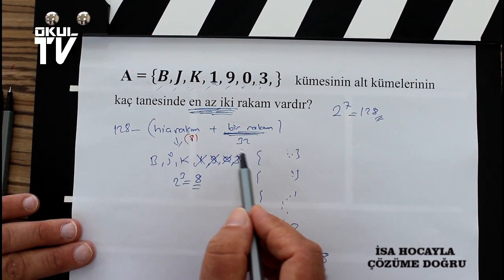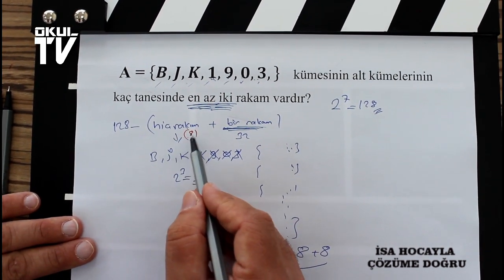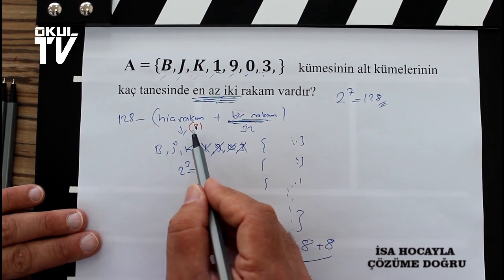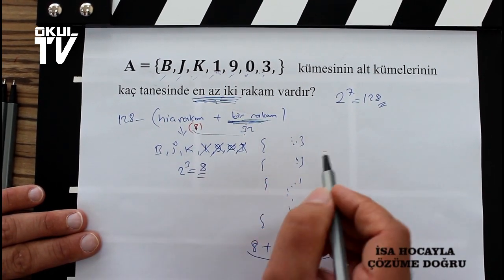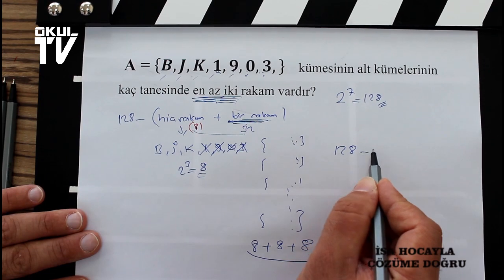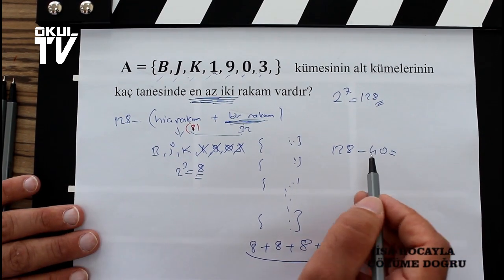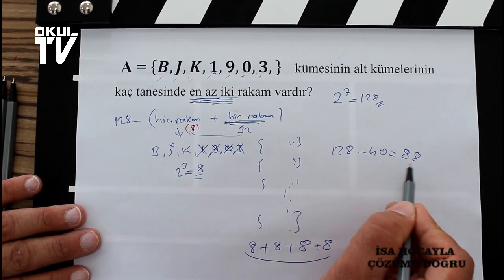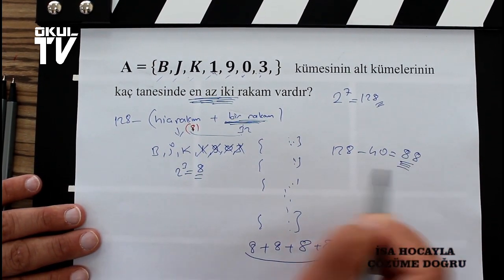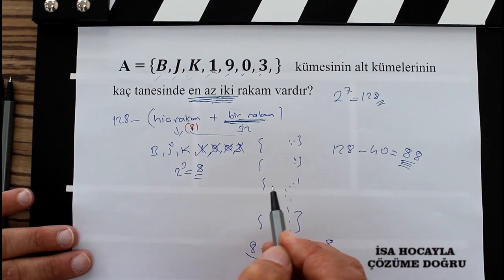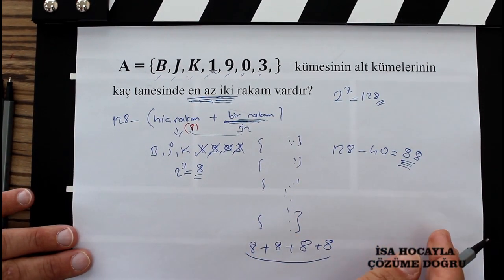O zaman arkadaşlar ne oldu? Hiç rakam olmayan küme ile bir rakamların olduğu küme 40 tane oldu. Tamamı 128 tane olduğu için 40'ı çıkardığımızda cevabımızın 88 olması lazım. Bir sonraki soruda görüşmek üzere, kendinize iyi bakın arkadaşlar.